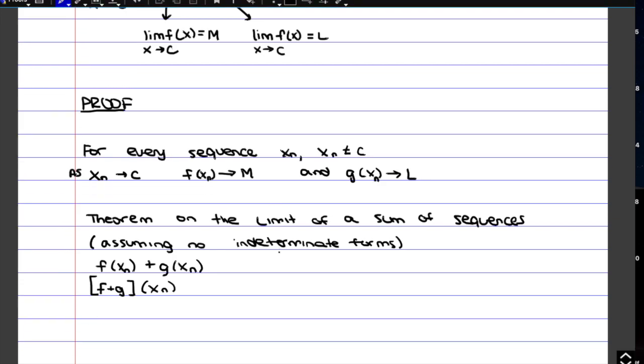And from the theorem on the limit of a sum, we can say that when we have addition, we can just add together the two limits m and l.